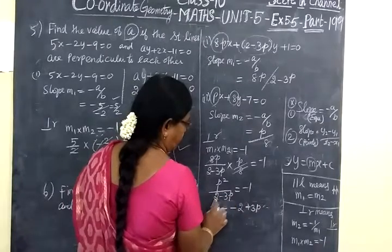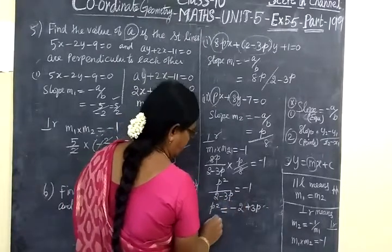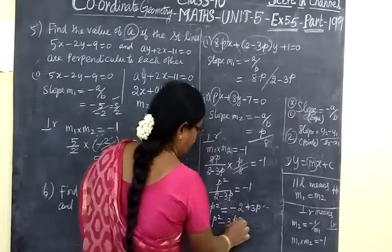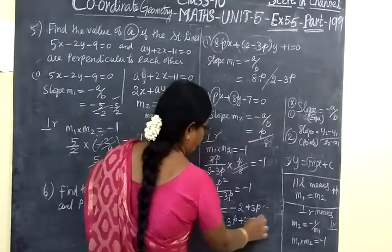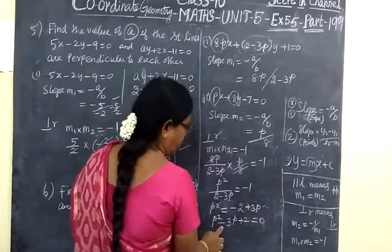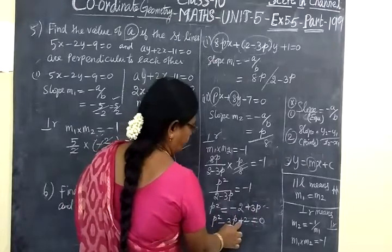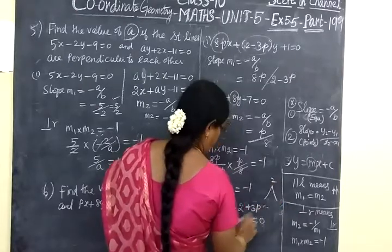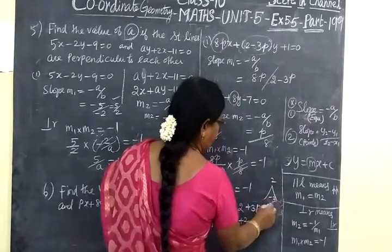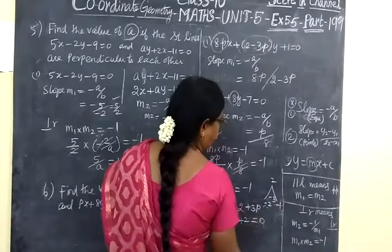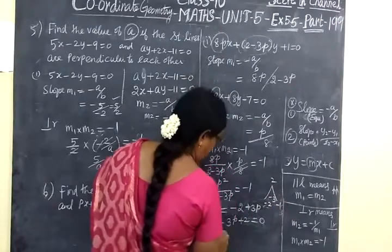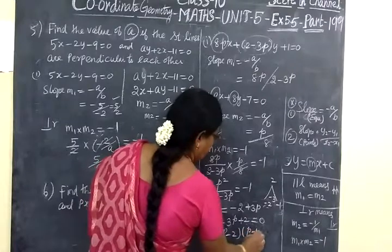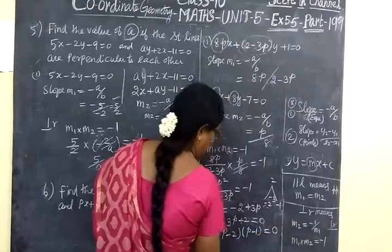Multiplying, minus times minus is plus. So P square minus 3P plus 2 equal to 0. Factoring: multiply 2, add 2 minus 3. So minus 2 minus 1 equals minus 3. So the answer is P minus 2, P minus 1 equal to 0.